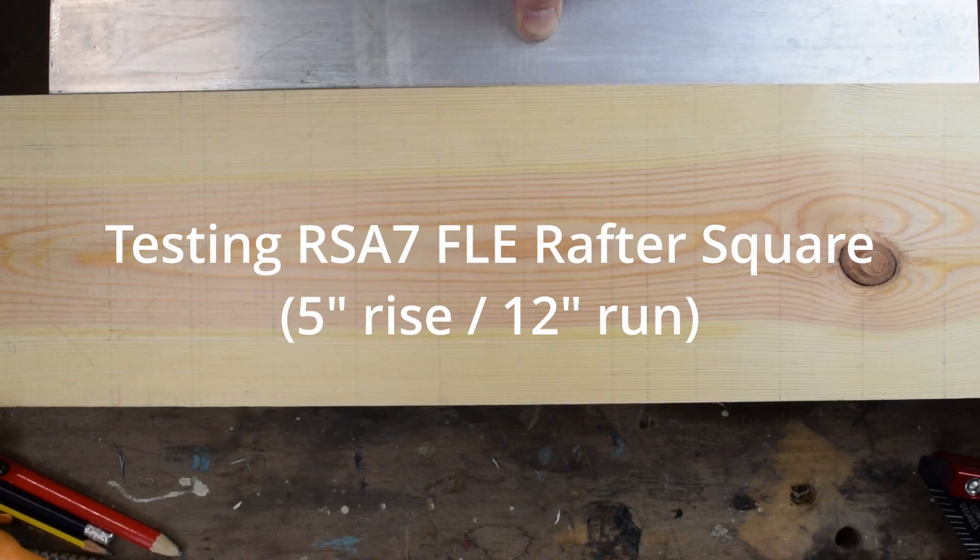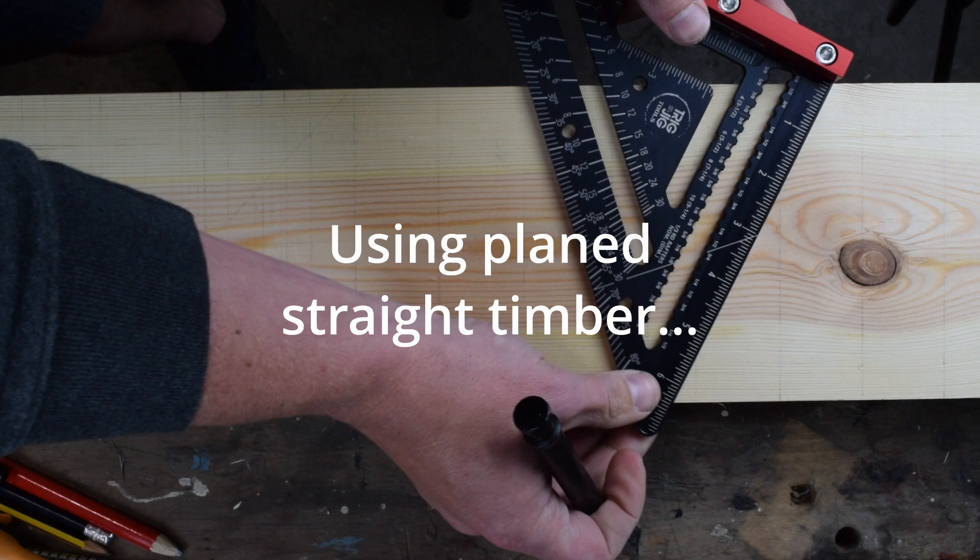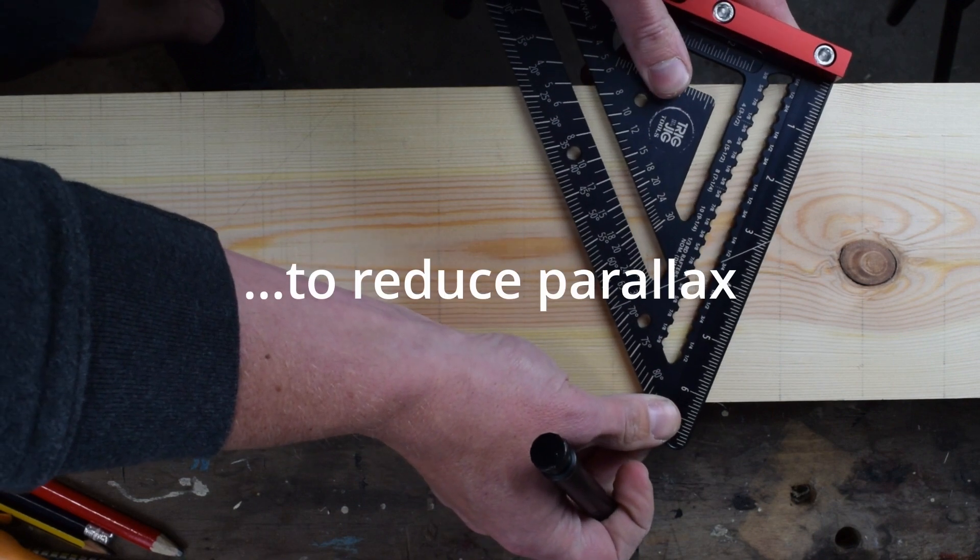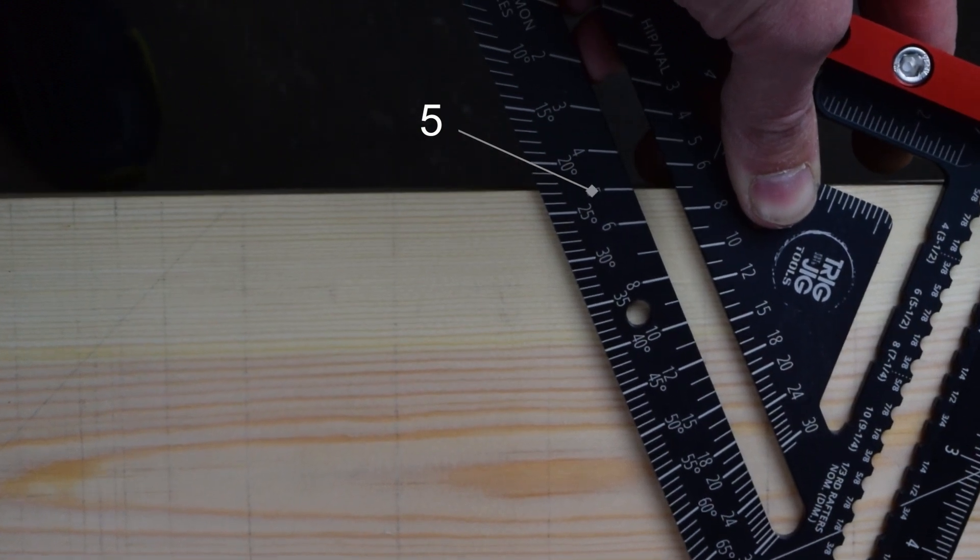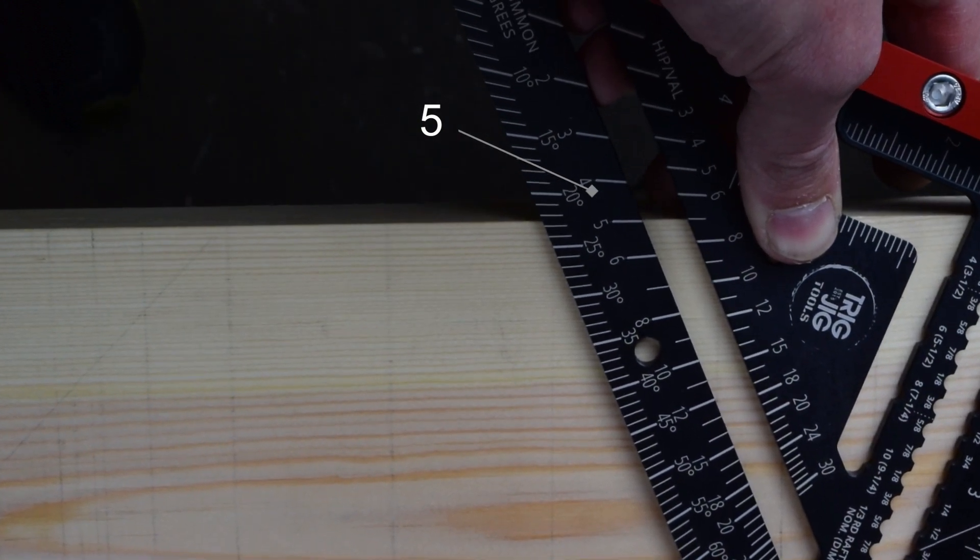I'm testing the scale precision of the Trigjig RSA fixed rafter square. I'm using plain timber for this demo. Watch the end of the video to see why using sawn timber is problematic when testing accuracy.